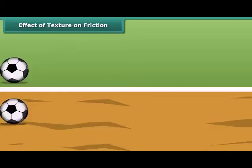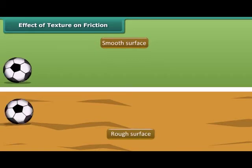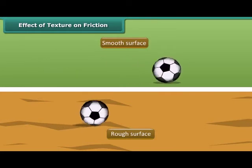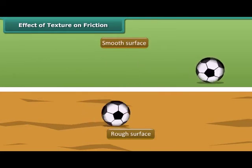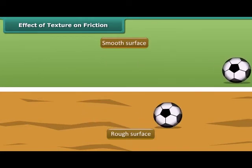In this figure, a ball is rolled on a smooth surface and another similar ball on a rough surface. Both balls start rolling on different surfaces with the same speed, same force, and at the same time.